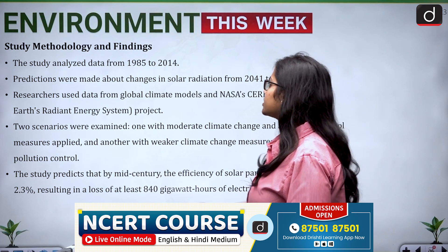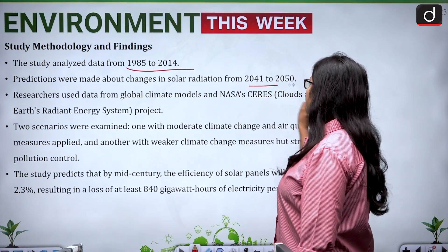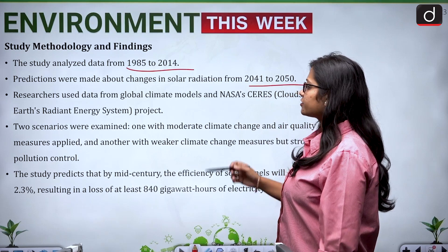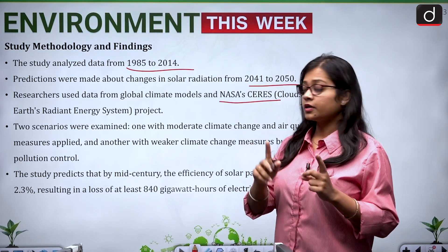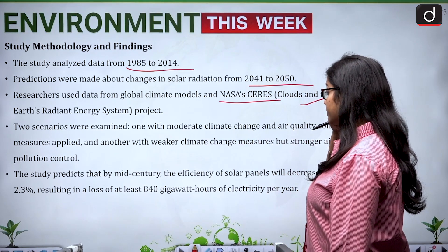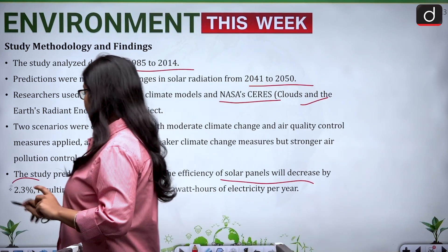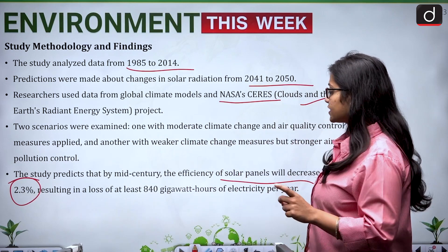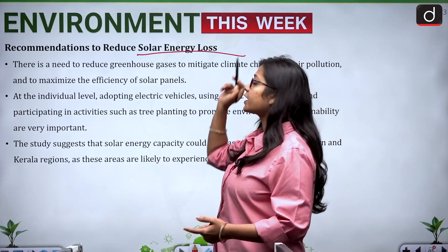The study analyzed data from 1985 to 2014 and made predictions about changes in solar radiation from 2041 to 2050. Researchers used data from global climate models and NASA's CERES project, which stands for Clouds and the Earth's Radiant Energy System. The study predicts that by mid-century, the efficiency of solar panels will decrease by around 2.3 percent, resulting in a loss of at least 840 gigawatt hours of electricity per year.